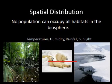If we look at spatial distribution, or how organisms are spread out across the globe, we see that no population can live in any habitat in the biosphere. Organisms need specific temperatures, humidity, rainfall, and sunlight. So this polar bear population won't do well in the rainforest on the left — it's going to need to occupy a polar habitat like that on the right.